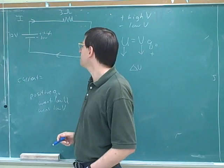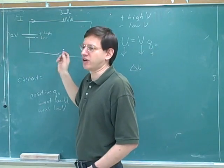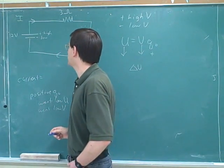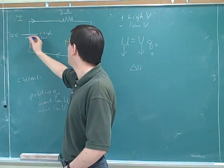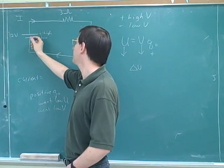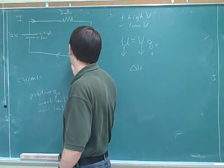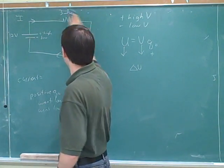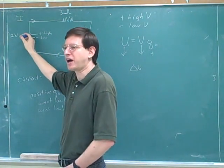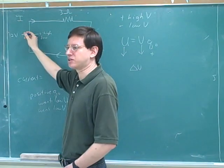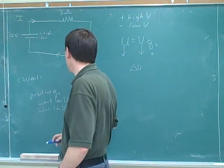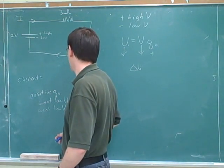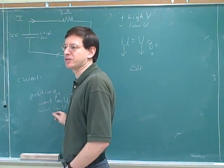Now, remember that what's really moving here is electrons. What's really happening is the electrons are moving away from the negative terminal and towards the positive terminal, because electrons — negative charges — want to move towards a high potential.